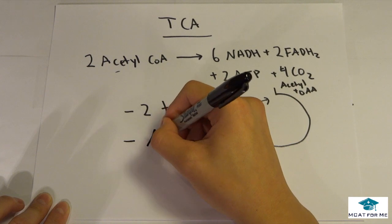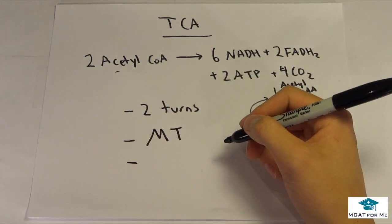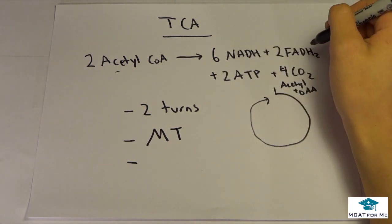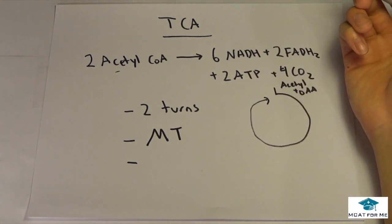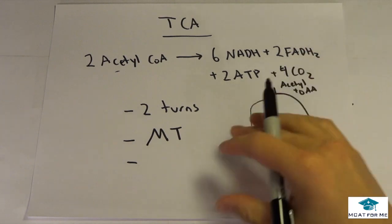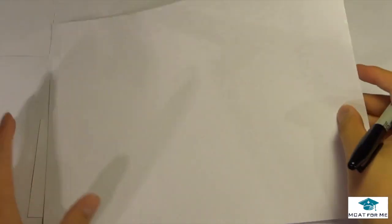So besides the two turns, what's important? It occurs in the mitochondria. It occurs in the mitochondria and it produces these three molecules, NADH, FADH2 and ATP. Very important for that. And it's also oxygen dependent. Do we need to know all the enzymes? No. If you do see them, they're going to be in the passages. You're going to actually see them on there.